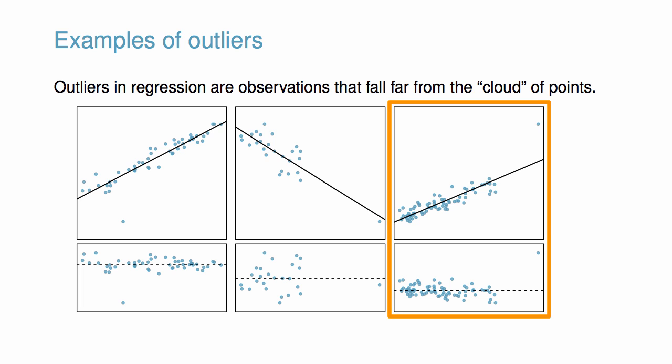In the rightmost panel, there is one point far away from the cloud, and this outlier appears to pull the least squares line up on the right. We would call this an influential point. Examine how the line around the primary cloud doesn't appear to fit very well.